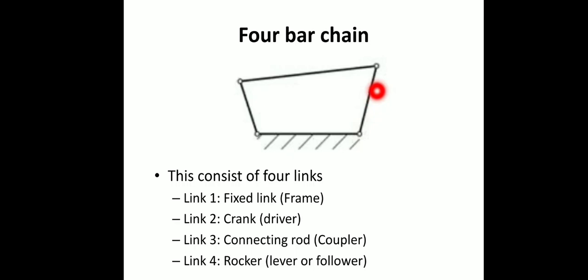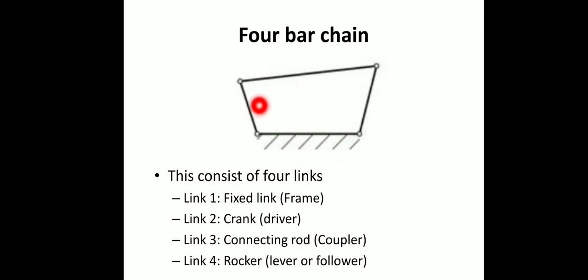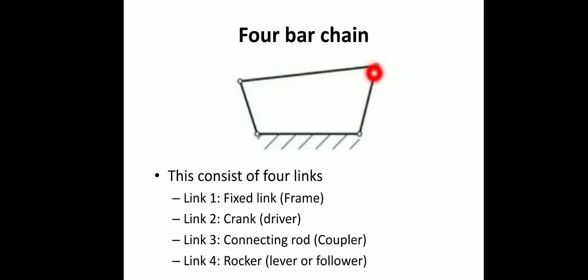For inversion from a four bar chain to a four bar mechanism, we can fix any one of the links. If the first link is fixed we get the first inversion. If the second link is fixed and the first freed, this is the second inversion. If the second link is freed and third link fixed, that is the third inversion. Finally, if the fourth link is fixed and all other links are free, that is the fourth inversion of the four bar mechanism.